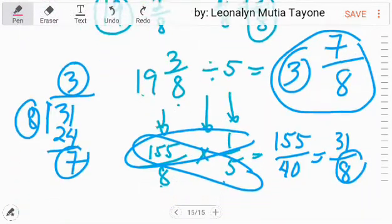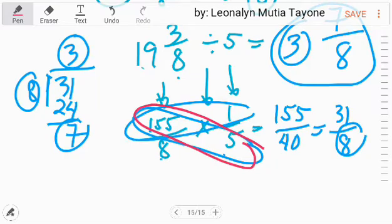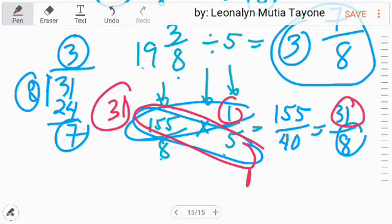Another way - if we did this first, divide 155 by 5, and that is 31. So this 5 becomes 1. So 31 times 1, that is 31. 8 times 1 and that is 8.